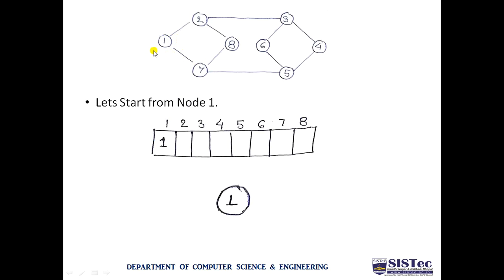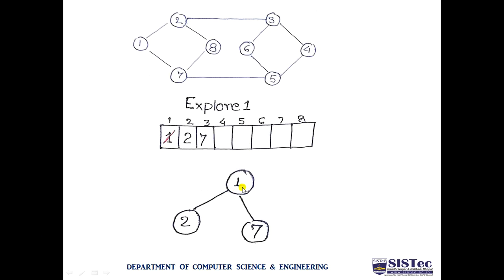Let us start from node 1. Once we visit node 1, we write it into an array at the first position. We also begin creating a spanning tree. Node 1 is visited, so it is written at position one. Now we explore node 1 — exploring means it gets deleted from the queue. Once node 1 is deleted for exploration, it is crossed out, indicating removal from the queue.